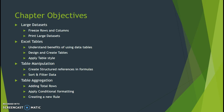Moving on to the chapter objectives, we're going to look at large datasets, discover how to freeze rows and columns, and print large datasets. We're going to be working with Excel tables, very similar to database tables. We'll cover some of the benefits, table design, using styles, table manipulation, table aggregation, creating total rows, subtotal rows, and then applying some conditional formatting within the table.